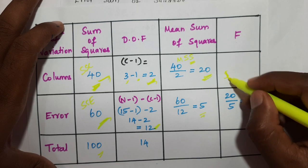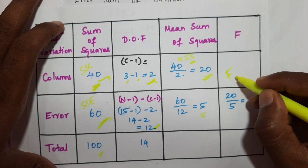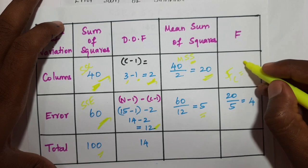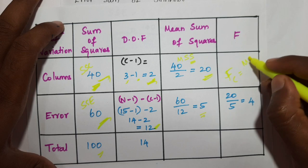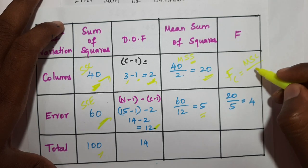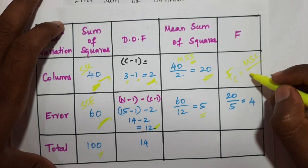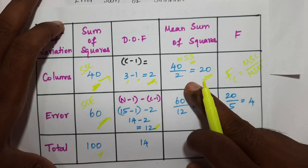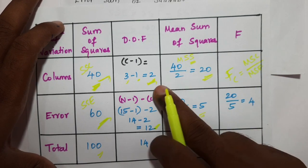Computing the F-ratio for columns: Fc = MSC divided by MSE.